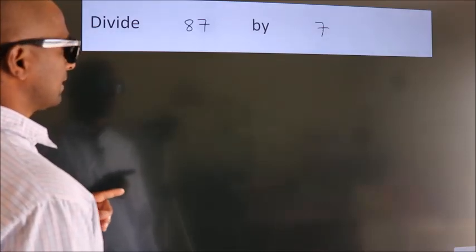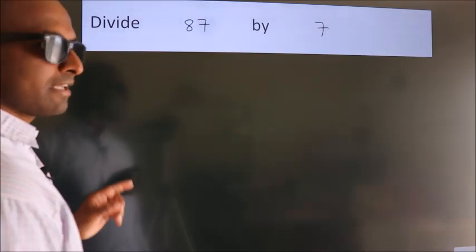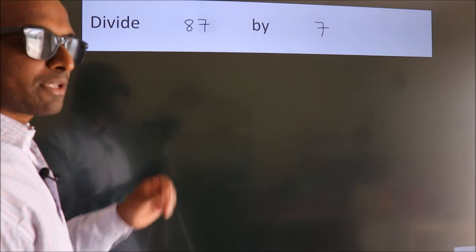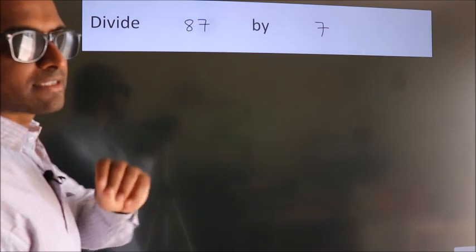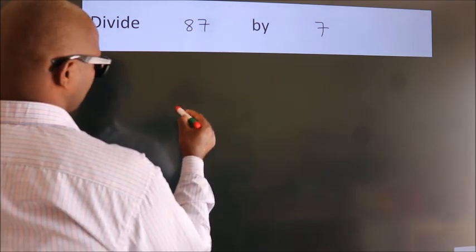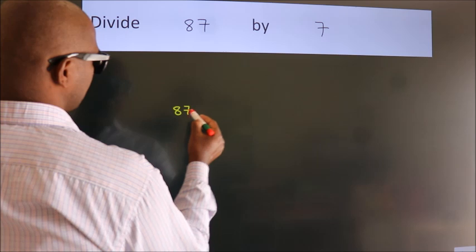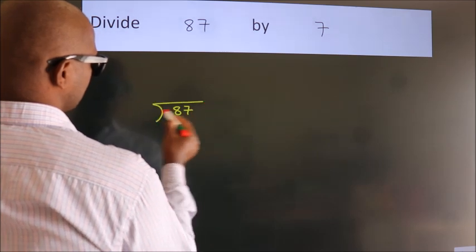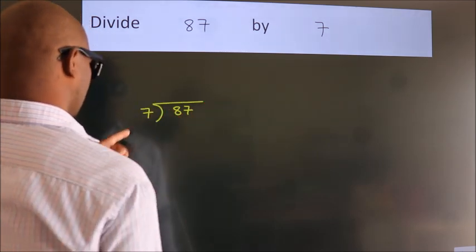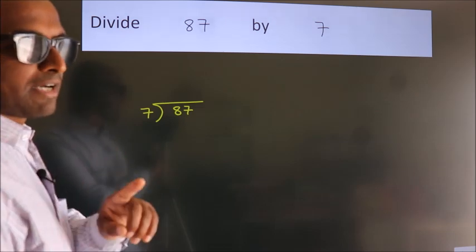Divide 87 by 7. To do this division, we should frame it in this way. 87 here, 7 here. This is your step 1.